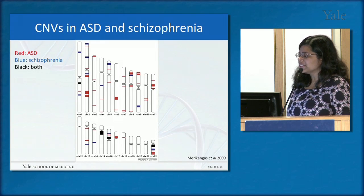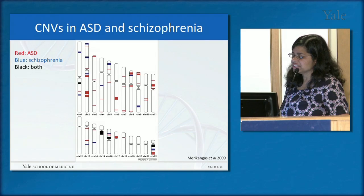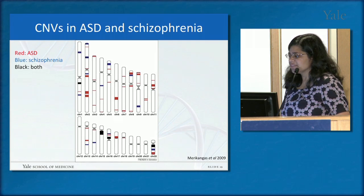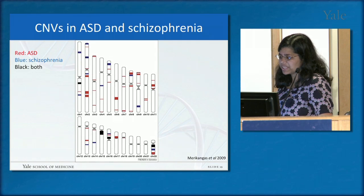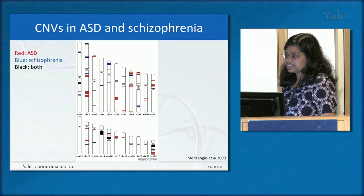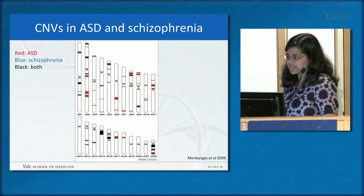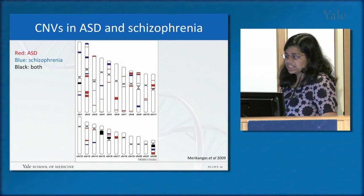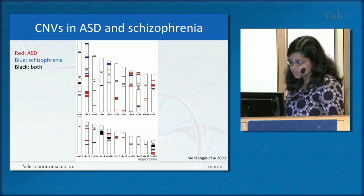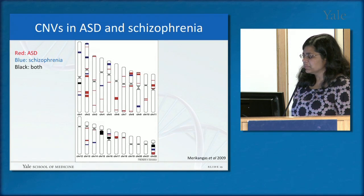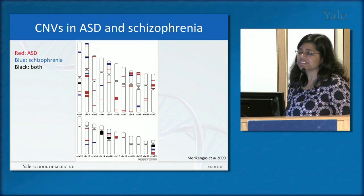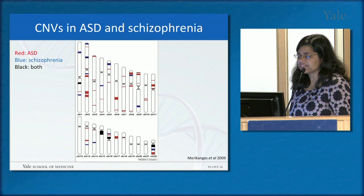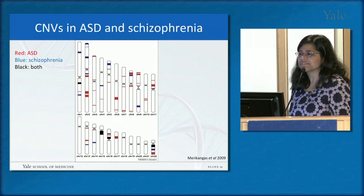A hot topic in the field is looking for overlaps in genetic etiology across neuropsychiatric disorders. Autism and schizophrenia are very different disorders, but interestingly there is some common genetics. CNVs found specifically in autism, specifically in schizophrenia, and in both disorders — for example on chromosomes 15 and 1 — have been mapped. This might shed light on common pathways affected in both disorders.